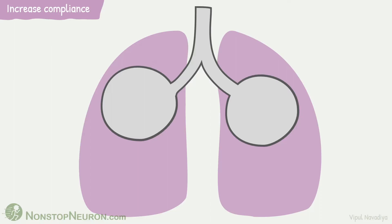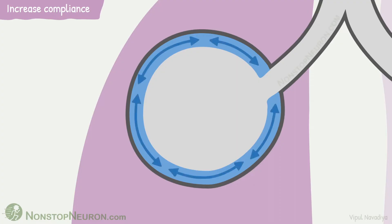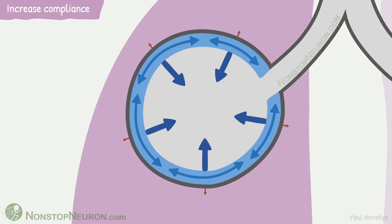First, increasing lung compliance. This is a simplified diagram of the lung — this is lung parenchyma, this is alveoli, and this is a layer of fluid on the wall of alveoli. The surface tension of this fluid tends to collapse the alveoli. To expand the alveoli, we need extra effort by respiratory muscles to overcome this surface tension. The more the surface tension, the harder it is to expand the alveoli.